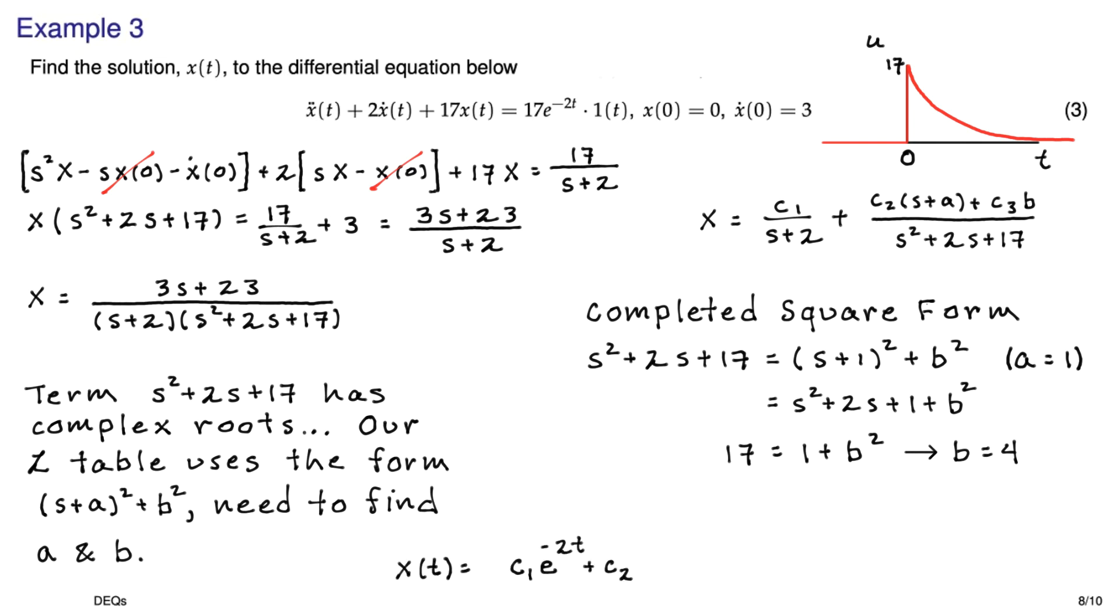And I can write out the solution with some unknown coefficients. Now when you take a step back and look at this solution, you can see there's a term, the c1 term, that has the characteristic shape of the input, the 17e to the negative 2t. So we have a c1e to the negative 2t. The other two pieces have the characteristic shape associated with the differential equation itself. I mean the x double dot plus 2x dot plus 17x.